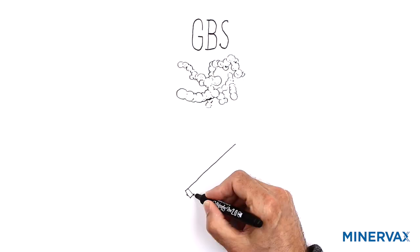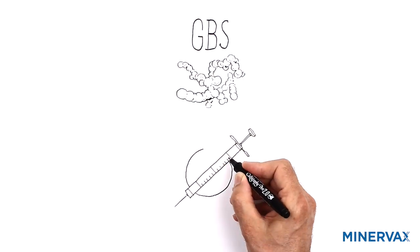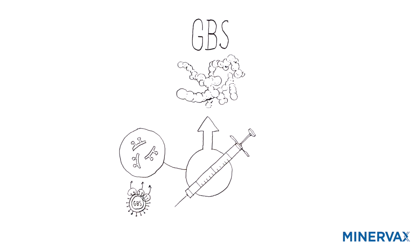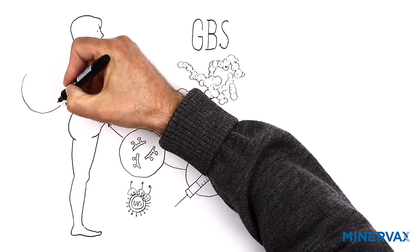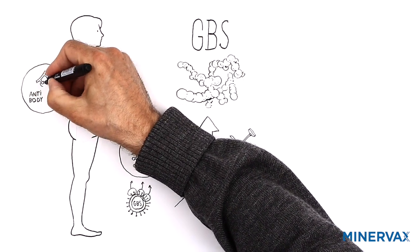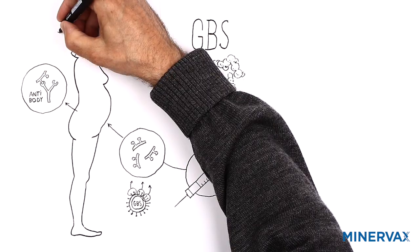One solution is to develop a protective GBS vaccine consisting of small components of the GBS bacteria that, given to pregnant women, will generate antibodies capable of preventing infections with GBS. This will, of course, protect the mother,